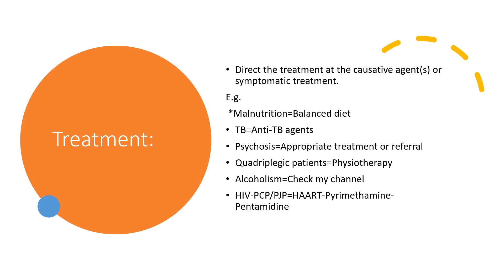Treatment should be directed at the causative agent, or we embark on symptomatic treatment. For example, if dealing with malnutrition, refer to a nutritionist and advise on a balanced diet. In case of tuberculosis, we should treat with anti-tuberculous agents: Rifampicin, INH, Pyrazinamide, and Ethambutol with Pyridoxine.